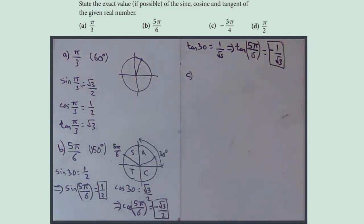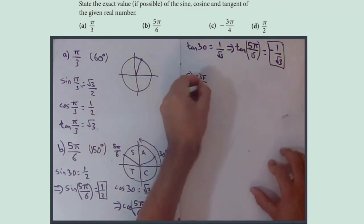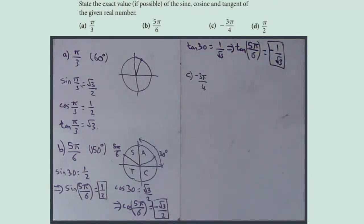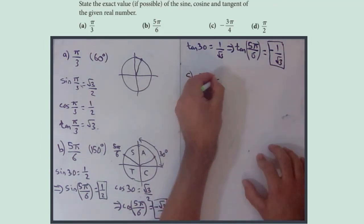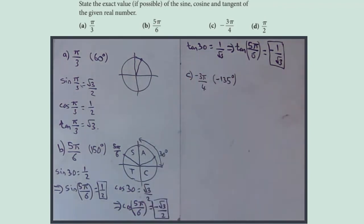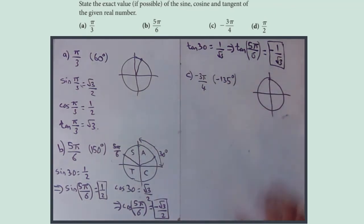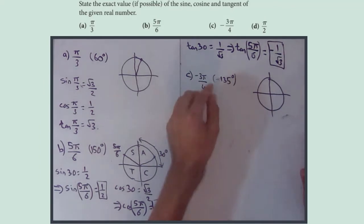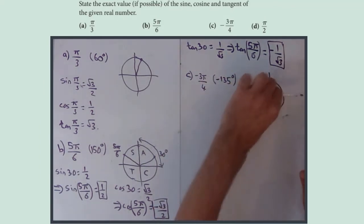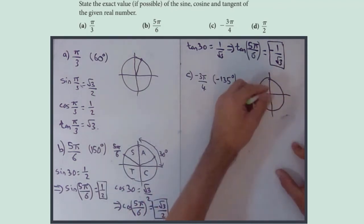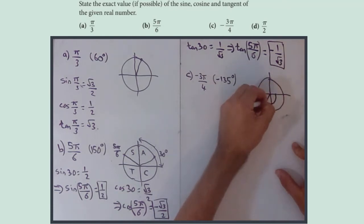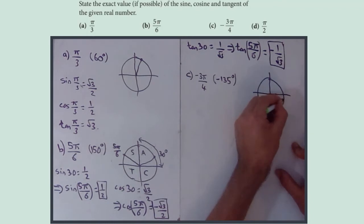Part c: −3π/4. π/4 is 45 degrees, so 3π/4 is 135 degrees, making this −135 degrees. Drawing a circle — 135 is 90 plus 45, and the minus means we go backwards (clockwise), so we go 90 plus 45 in the negative direction. That angle is −3π/4, landing in the third quadrant.